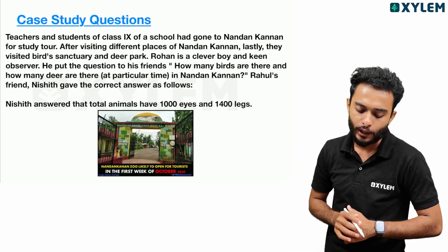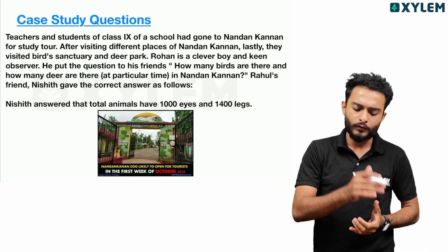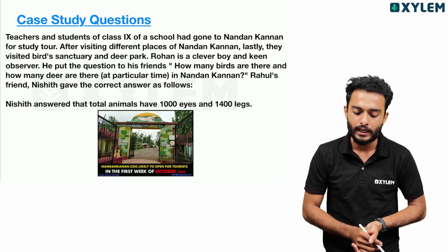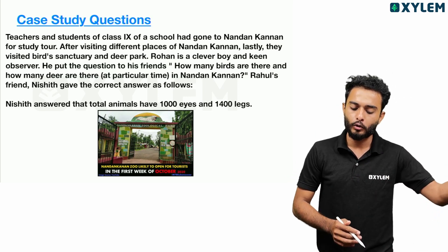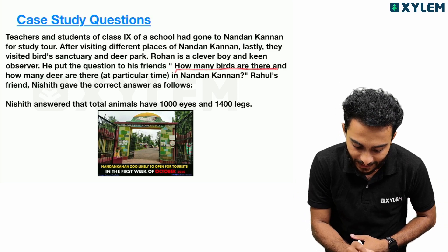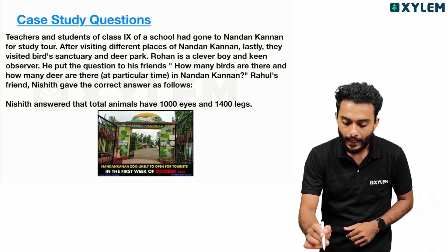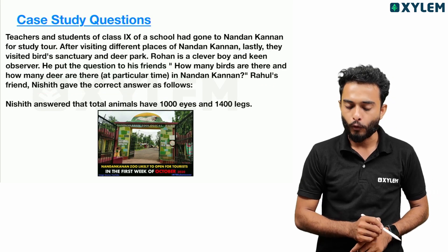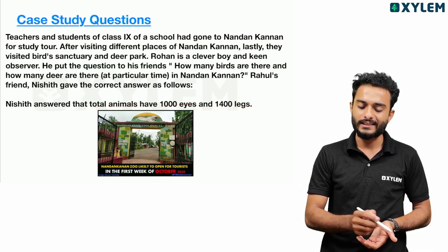Teachers and students of class 9 went to Nandan Kannan for a study tour. After visiting different places, they visited the bird sanctuary and deer park. Johan, a clever and keen observer, asked his friends how many birds and deer are there in Nandan Kannan. His friend Nishith gave the correct answer: the total animals have 1,000 eyes and 1,400 legs.